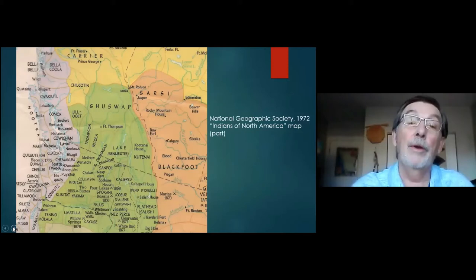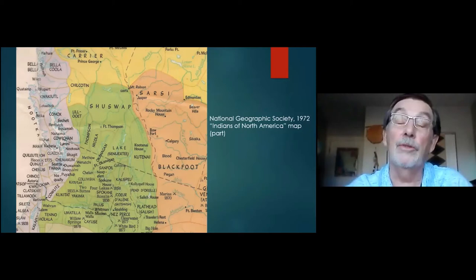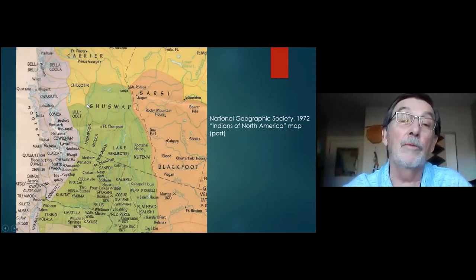Then other organizations and cartographers get into the game. This is produced by the National Geographic Society in 1972. Fort Thompson here is where Kamloops is located, and this is part of a much larger map, Indians of North America. It shows the lake area that I talked about, carved out of the former Shuswap territory, which extended, according to Tate on his first map, down in this area.